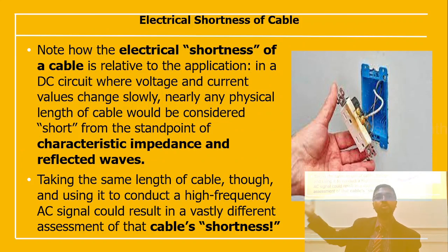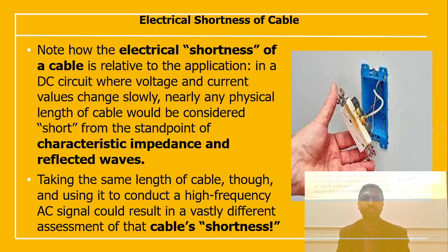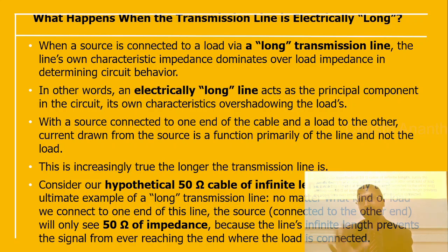The electrical shortness of a cable is related to the application. In a DC circuit where voltage and current values change slowly, nearly any physical length of cable is considered short from the standpoint of characteristic impedance and reflected waves. Using that same cable to conduct a higher frequency AC signal results in a different assessment of shortness. When the source is connected to the load through a longer transmission line, the line's characteristic impedance dominates over the load impedance — an electrically long line overshadows the load characteristics.